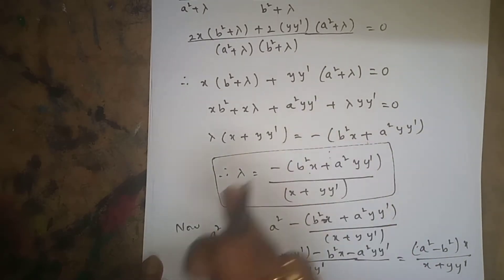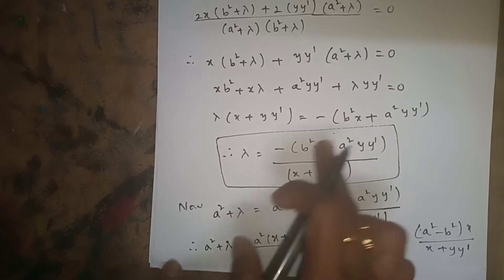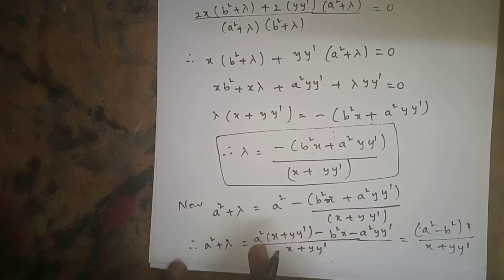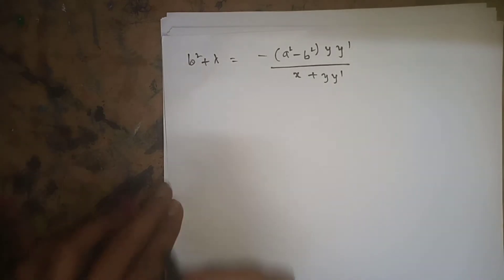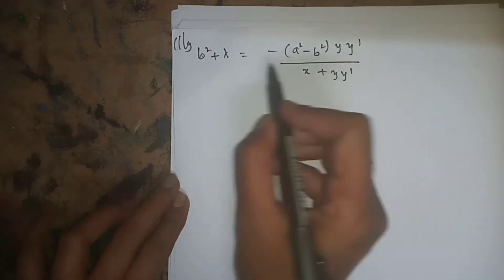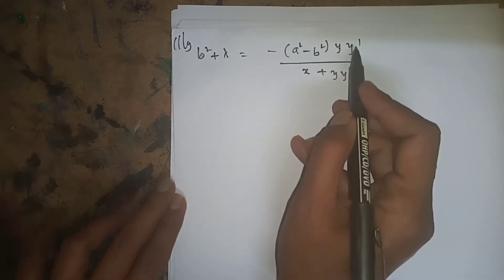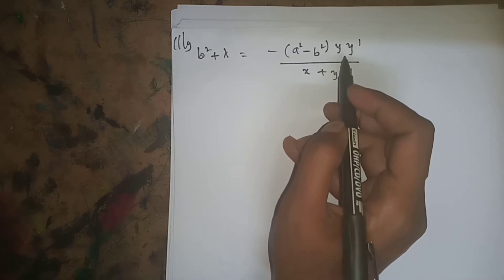Now, a²+λ means we substitute the λ value we found. Finding the LCM and simplifying, the a²·y·y' terms cancel, giving us the value of a²+λ. Similarly, b²+λ is found in the same way — wherever x appears, replace with y, and wherever x·y' appears, replace accordingly.